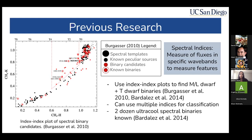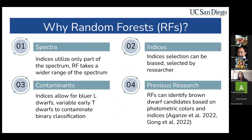Some previous research on these systems is done using spectral indices. A spectral index measures fluxes in specific wave bands to measure features. Using the indices methane K and methane H to separate known spectral templates and sources with known binaries and possible binary candidates, this previous method is used to find M, L, and T dwarf binaries. So far, around two dozen of these have been found. We want to improve on this method, so why try random forests specifically?